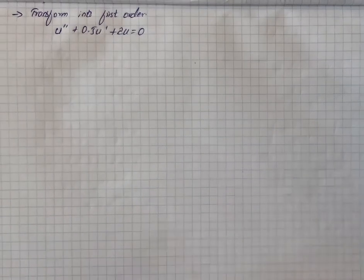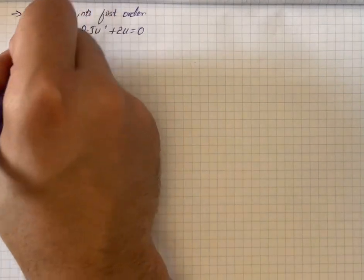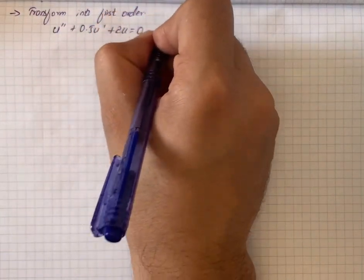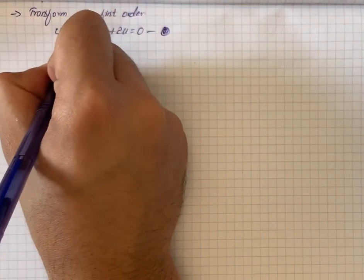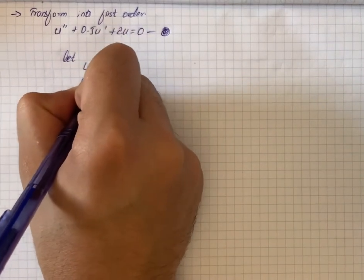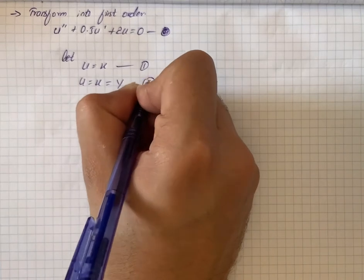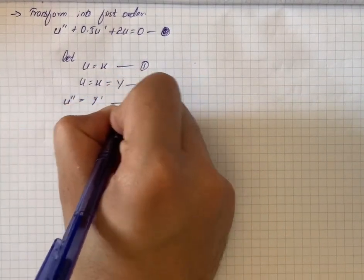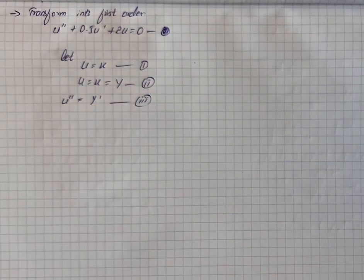Here we have to transform the differential equation. We let u equal x — that is equation number one — and u prime equal y, which is equation number two. Then u double-prime equals y prime, which is equation number three.